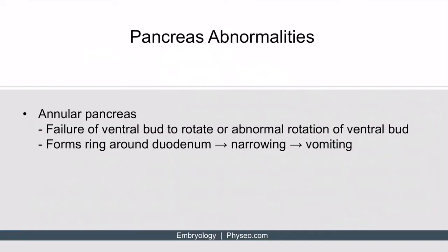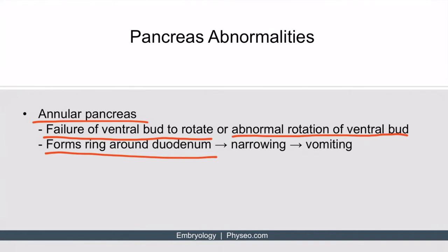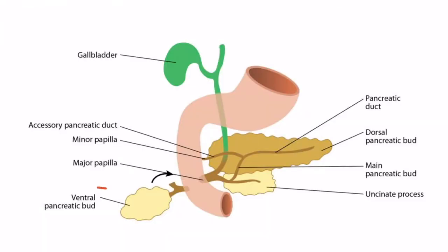Abnormalities can arise when pancreatic development goes wrong. One condition is called annular pancreas, which results when there's failure of the ventral bud to rotate, or abnormal rotation of the ventral bud — either way, it's a rotation problem. This can result in a ring that encircles the second part of the duodenum, making it more narrow. This narrowing leads to obstruction, which causes vomiting. If the ventral pancreatic bud fails to rotate, you get this ring constricting the duodenum.